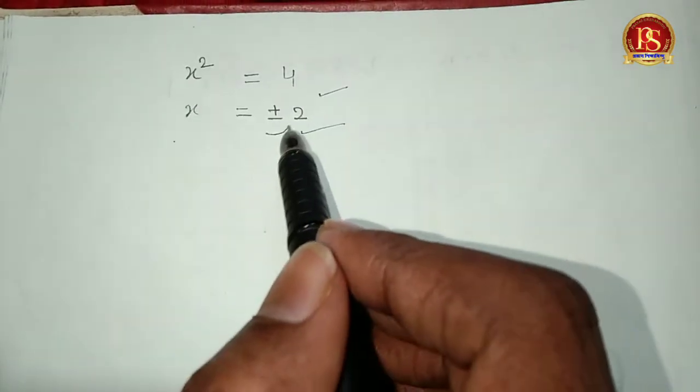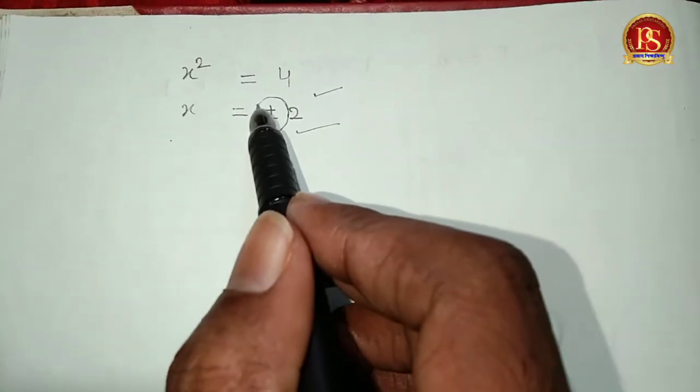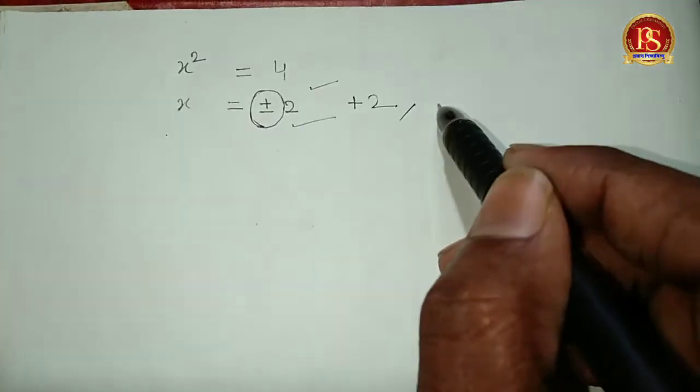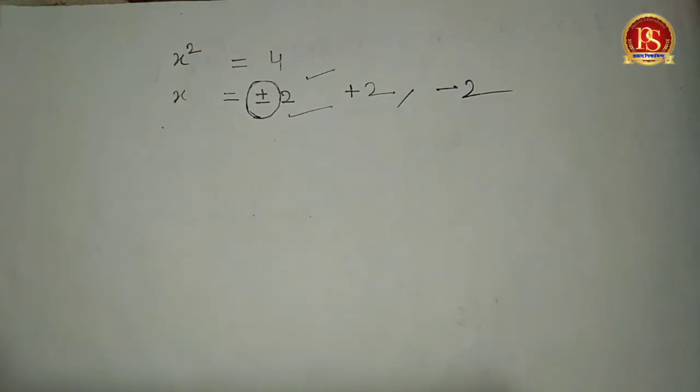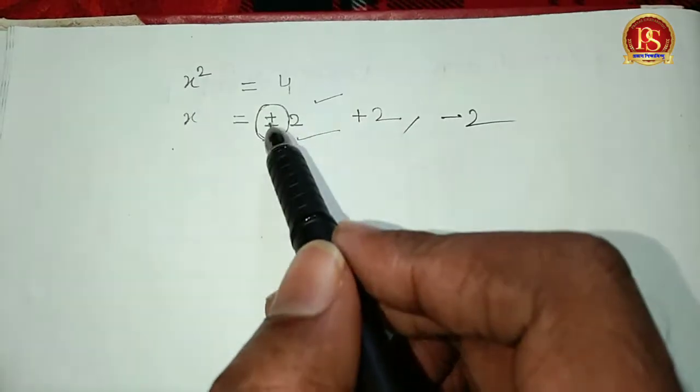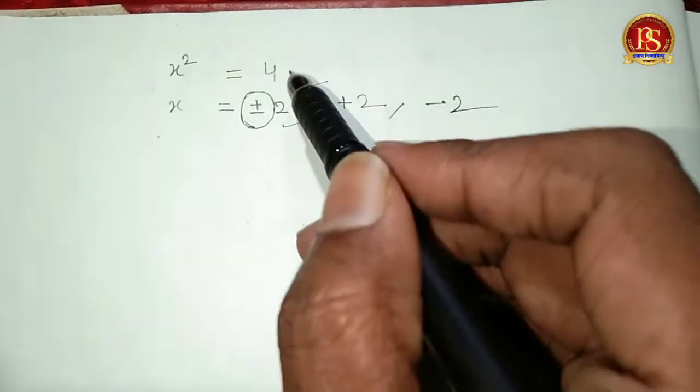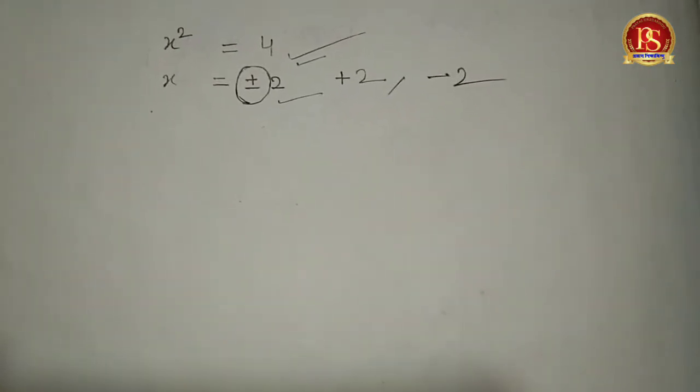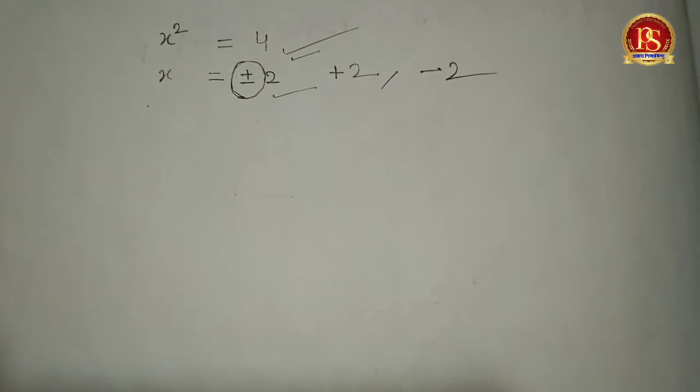In this case, we get plus minus 2. Let me explain why this is correct. When we consider +2, it works, and when we consider -2, it also works. Both values satisfy the equation, so we get both +2 and -2 as solutions.